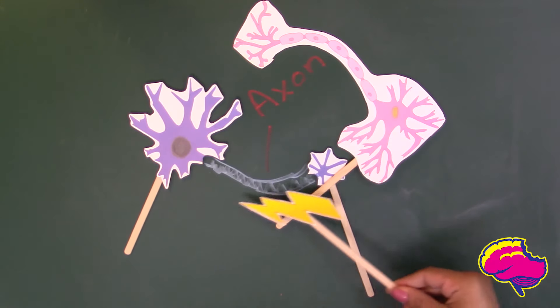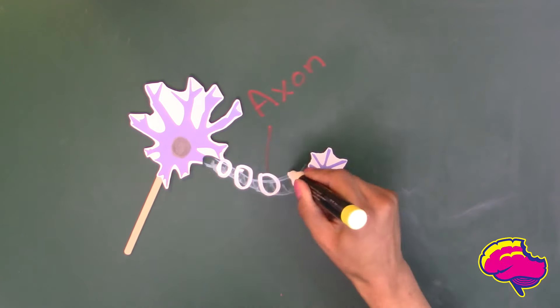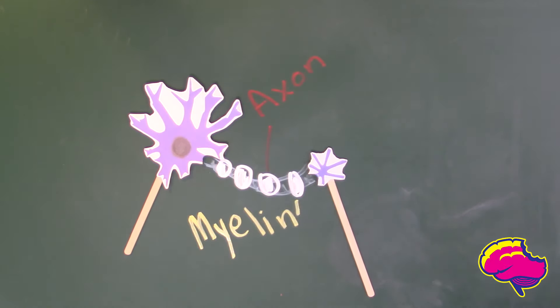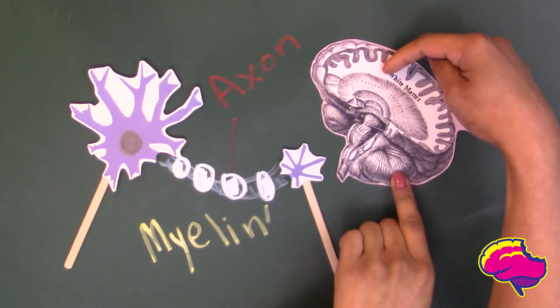Extending from the cell body is a tubular structure called the axon. Axons enable signals to travel down the brain cell to then be transmitted to neighboring cells. Some are wrapped in a fatty substance known as myelin, which is designed to speed up signal transmission. Myelin is white in appearance, accounting for the white matter throughout the brain.